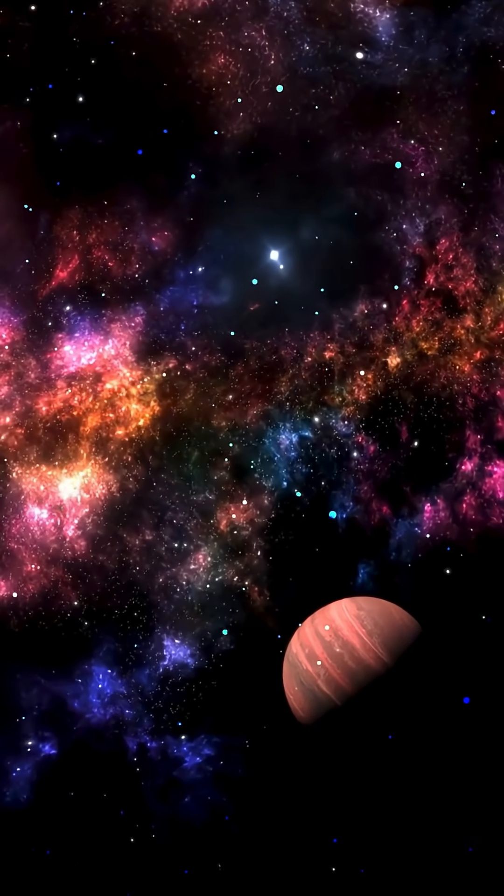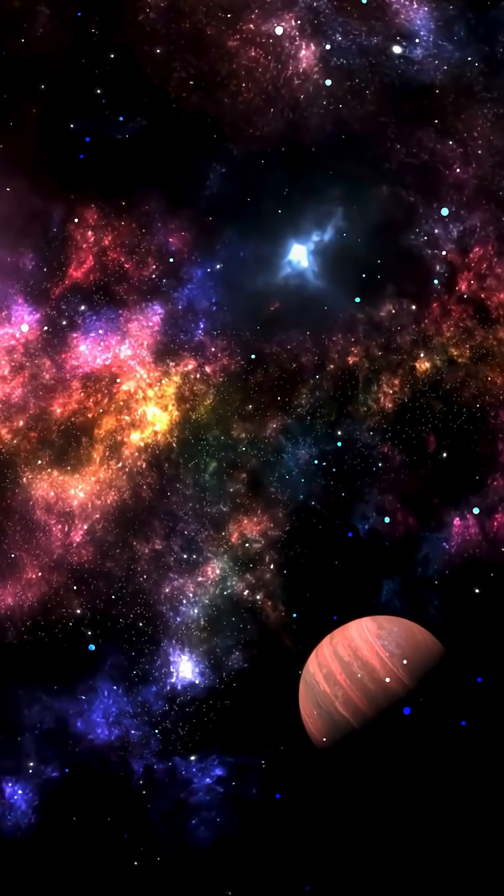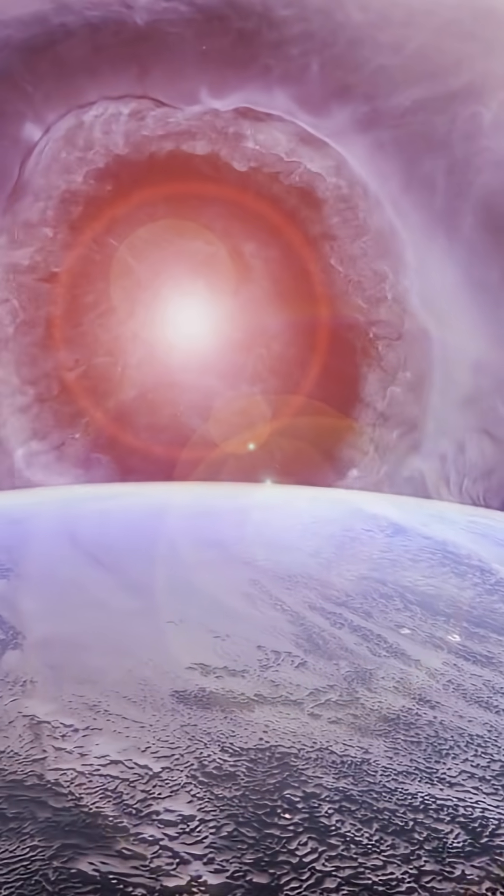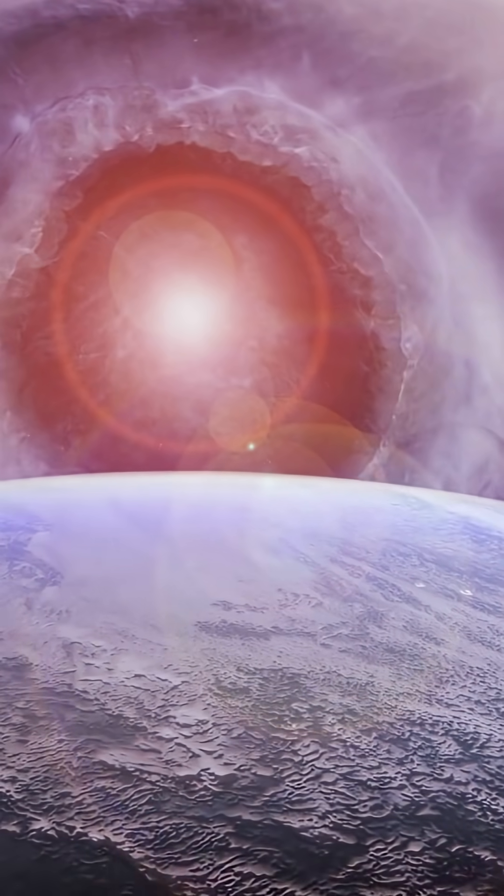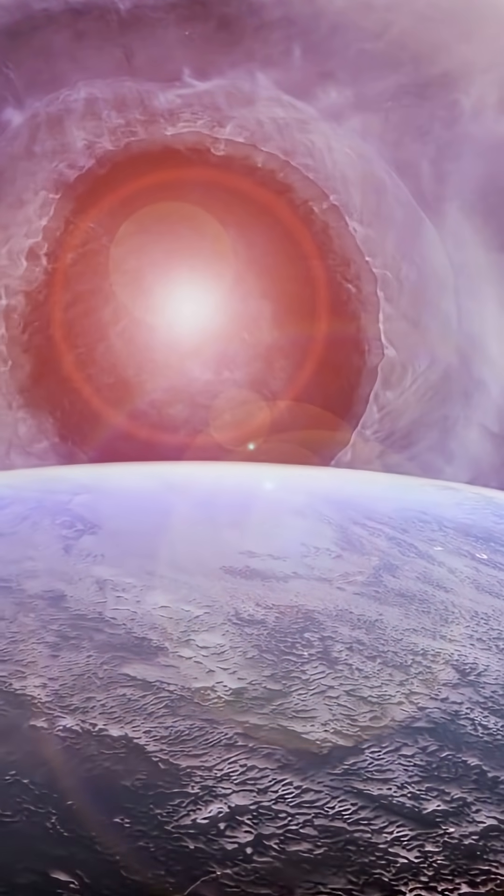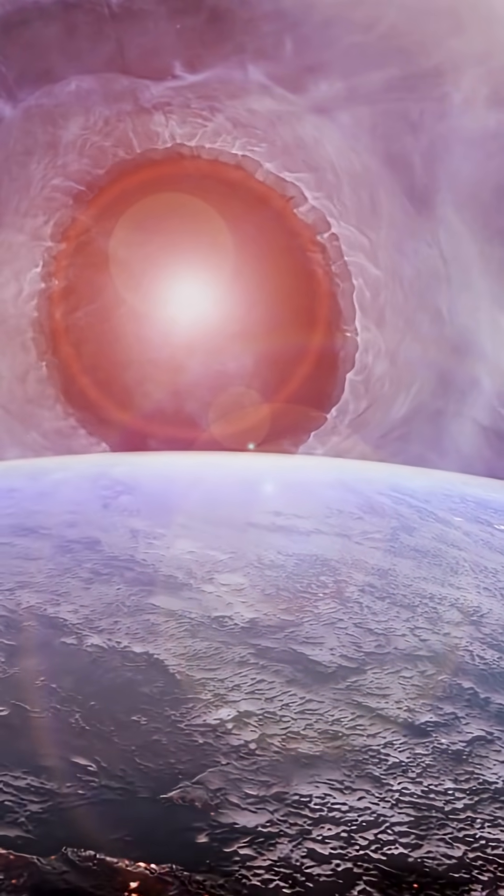In 8 billion years, the sun will begin its final transformation into a dead white dwarf. Its outer layers will dissipate, leaving behind a dense glowing ball the size of the Earth, but with the same mass of the sun.